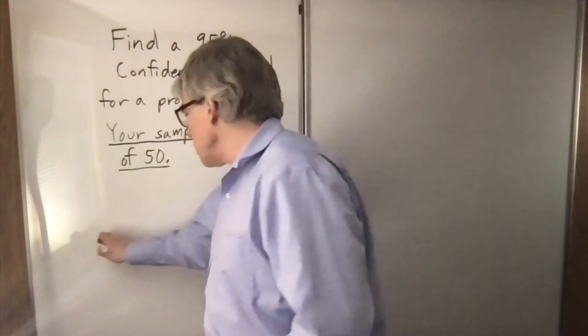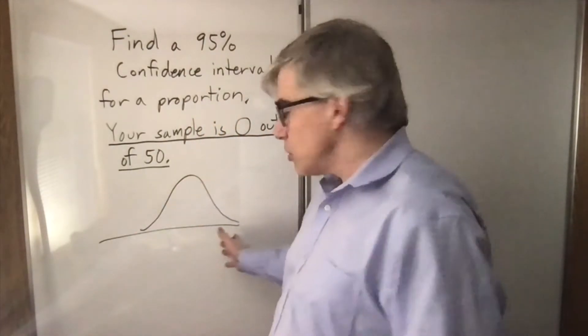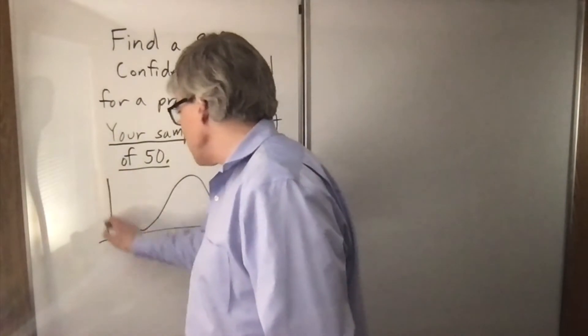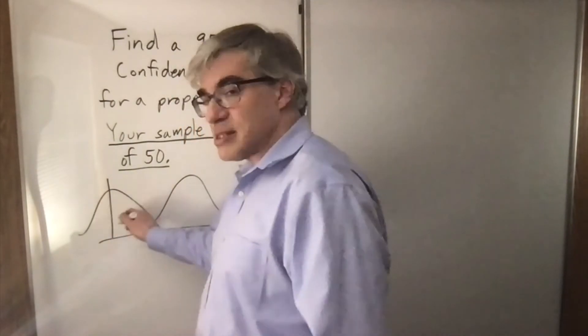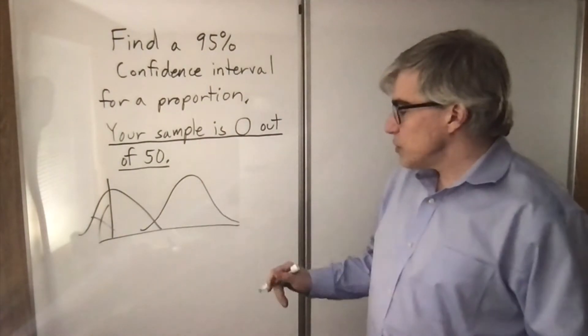Because we can't use the bell curve, right? Because the bell curve requires that you not be too close to zero, because what we're talking about here is like way over there into impossible land. So what do we do to cope with it?